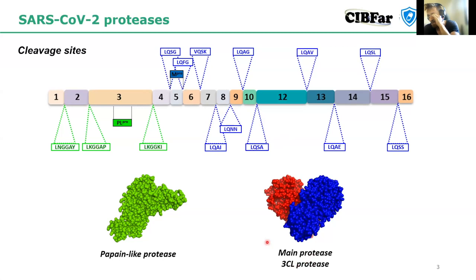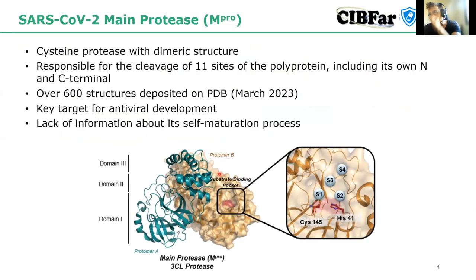An important feature of the main protease is that it cleaves its own N and C terminals. Combined with the fact that the active form of the protein is a dimer, it is described in literature from SARS-CoV-1 work that the protein must be a dimer to be active. The question was how the protein cleaves its own N and C terminal to become the dimer while it is inactive in the polyprotein form — this process is called maturation.